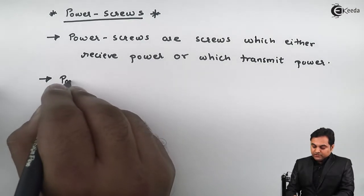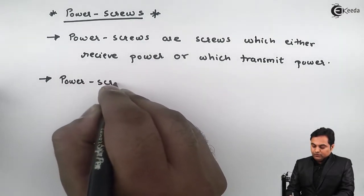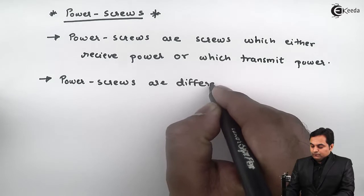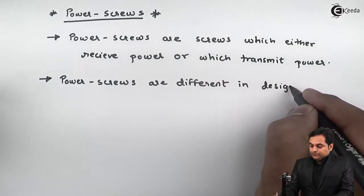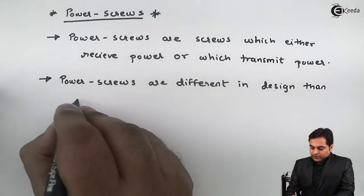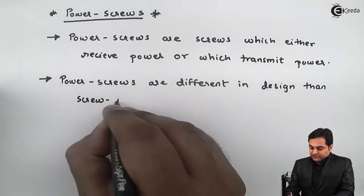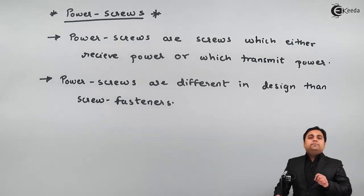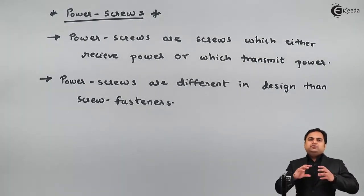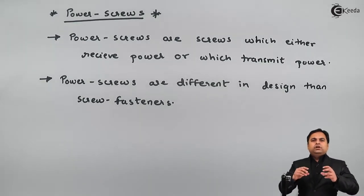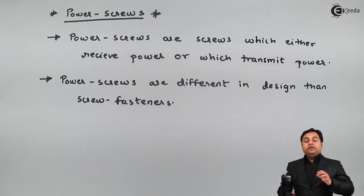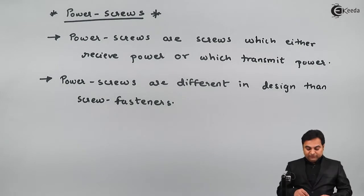Power screws are different in design from screw fasteners. Screw fasteners are screws used as a temporary joint — if we have two parts joined by screws, that is called a screw fastener. But power screws, since they are transmitting power, their design is different from that of screw fasteners.